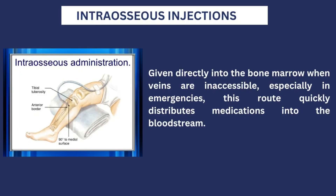The next type of injection is the intraosseous injection. From the word 'osseous,' this is related to the bone. The intraosseous injection is given directly into the bone marrow when the veins are not accessible, especially in an emergency situation. This route is used to quickly distribute medications into the bloodstream. This is not a commonly used route — you have to be specially and properly trained to administer it. Don't just jump ahead and try to inject the bone without multiple practices and proper training.